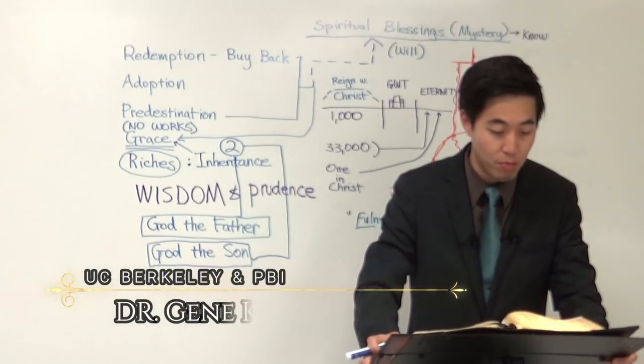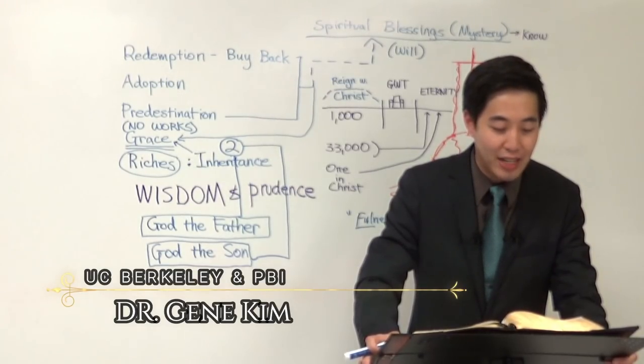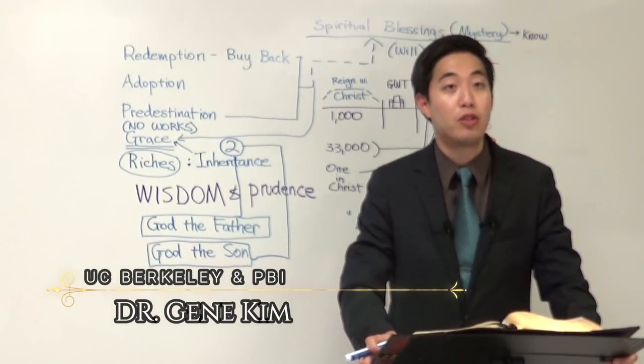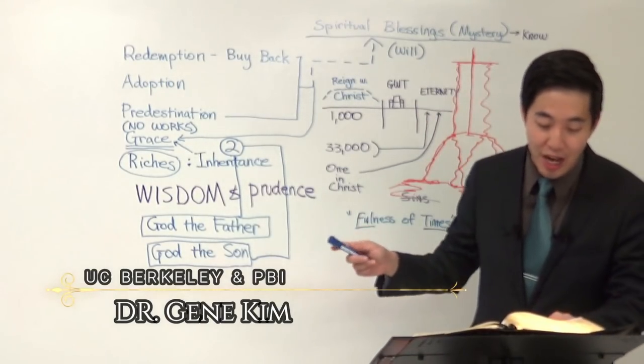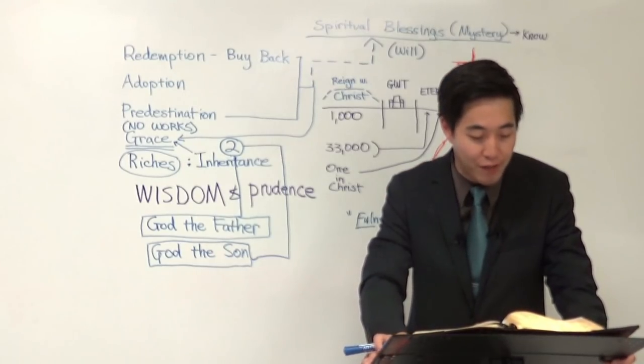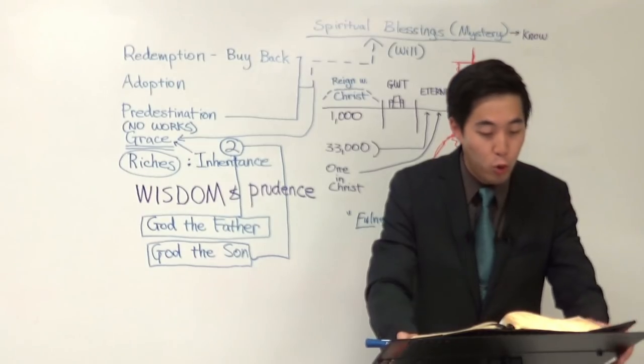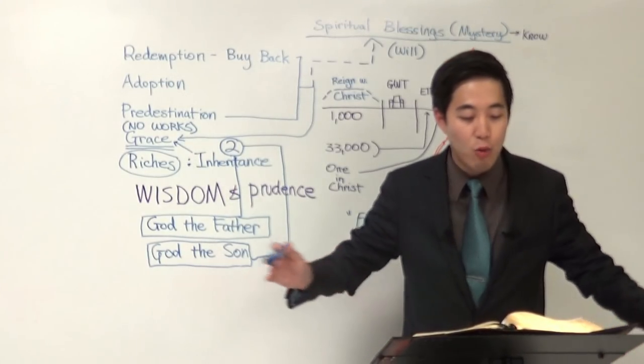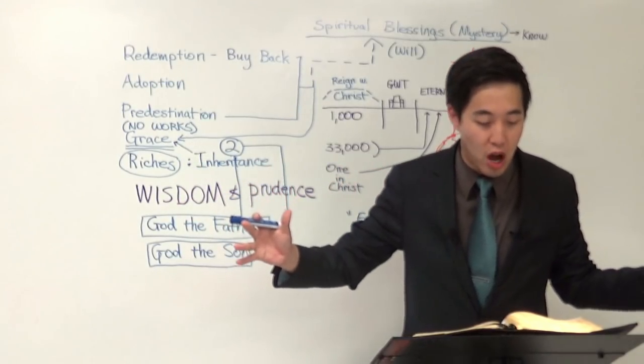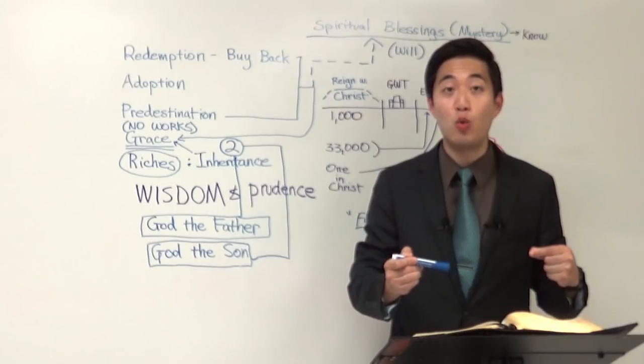Let's go back to verse 11. In whom also we have obtained an inheritance, being predestinated. See, that's predestinated, so that cannot be undone. God already predestinated according to the purpose of Him. He already purposed it, He determined it. Who worketh all things after the counsel of His own will. He works everything that goes on according to His counsel, His own will.